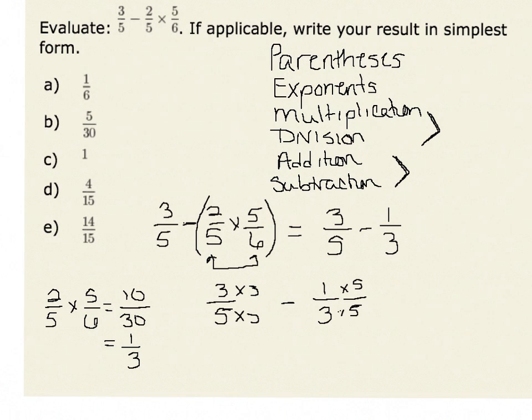Therefore, 3 fifths minus 1 third is equivalent to 9 fifteenths minus 5 fifteenths, which results in 4 fifteenths, giving us our answer D.